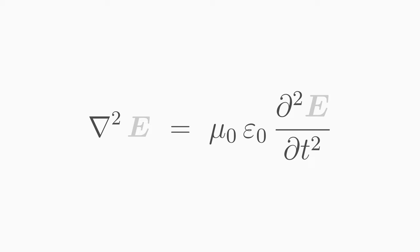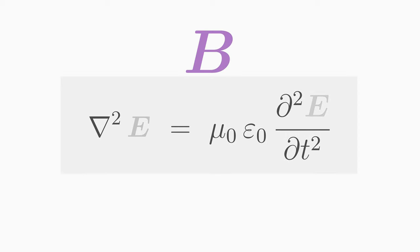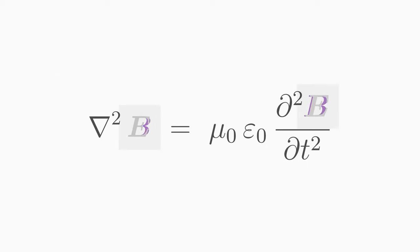The derivation of the wave equation for the B field is analogous. You get exactly the same wave equation, only with the letter B instead of E.